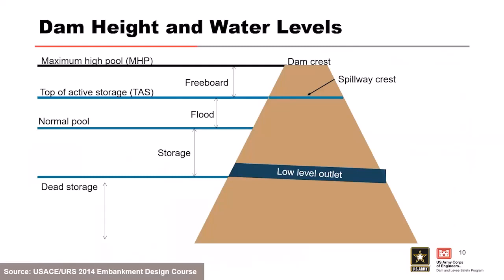Just to make sure we're all on the same page on terminology: dead storage goes from the bottom of the reservoir up to the invert of the low-level outlet. Normal pool or conservation pool goes from that level up to where the pool is typically maintained, such as for water supply. Above that is flood storage up to the spillway crest — the top of active storage. Freeboard then goes from the spillway crest up to maximum high pool.